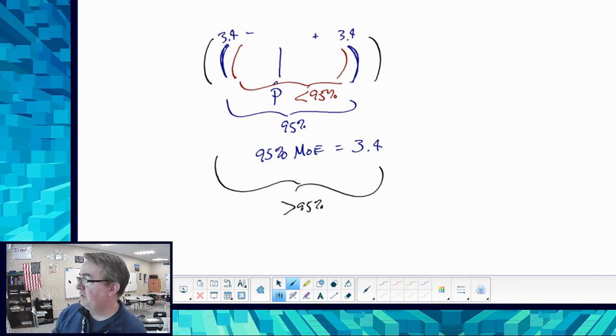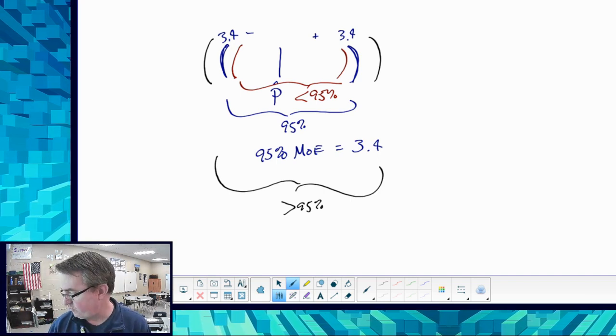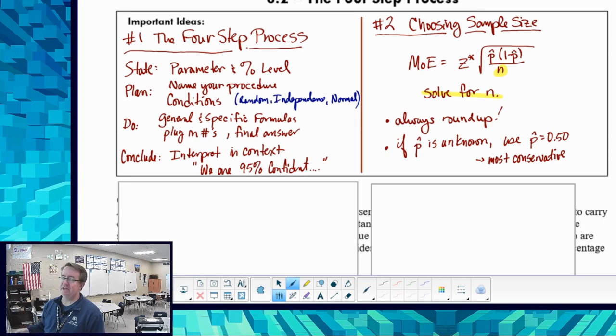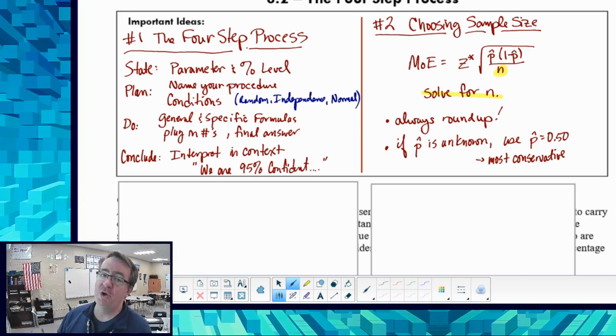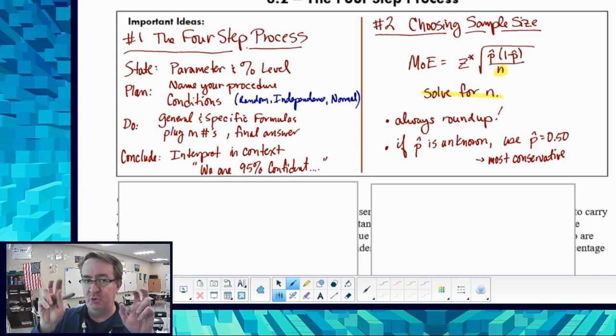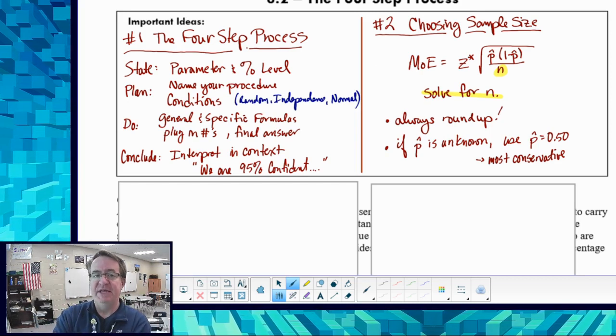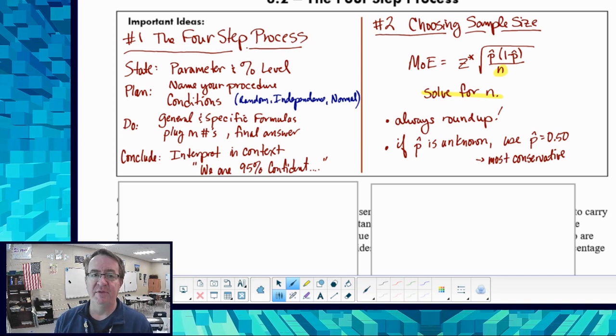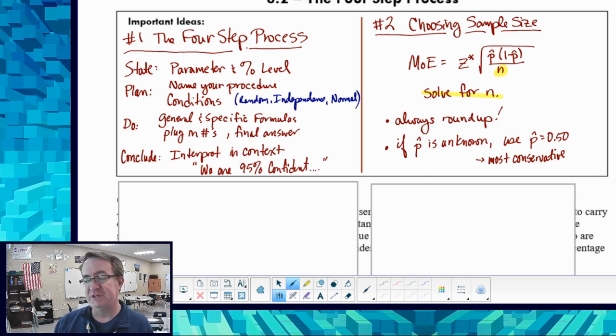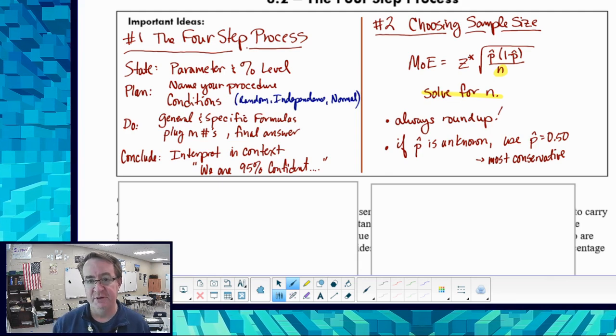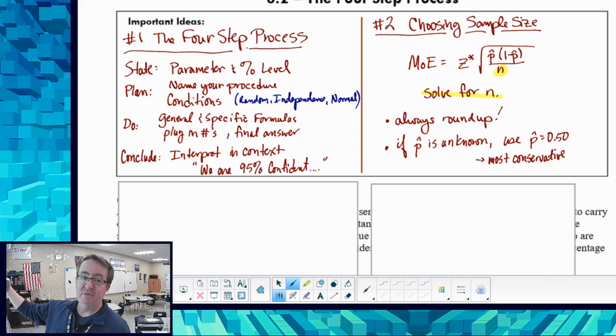The other thing that we need to do is this. If p hat is unknown, you're going to do 50-50. There's two ways to think about it. If we don't know what p is, the worst case scenario is that both sides have an equally likely chance of happening - 50% win, 50% lose, 50% success, 50% failure. If it's higher than that, great.